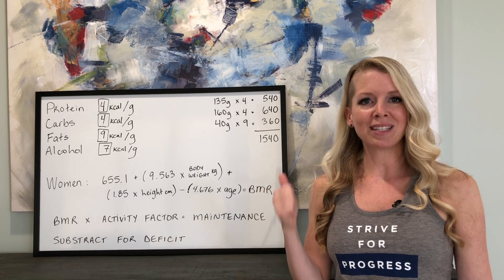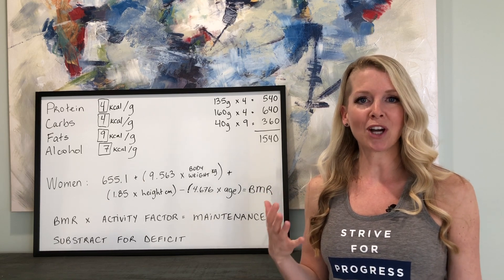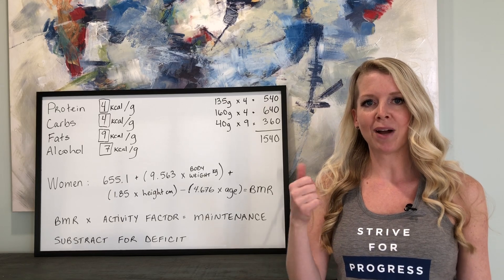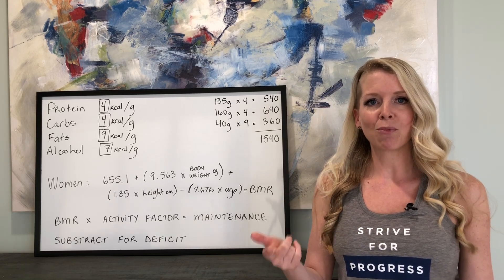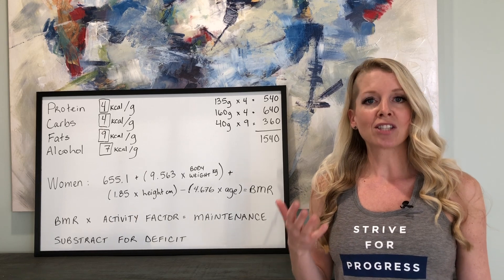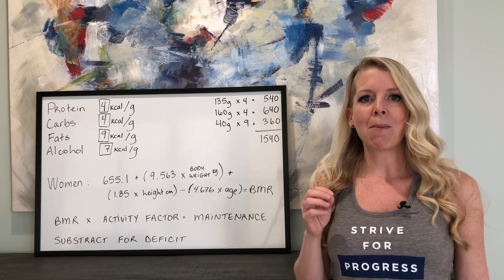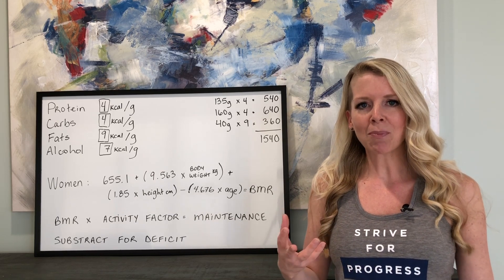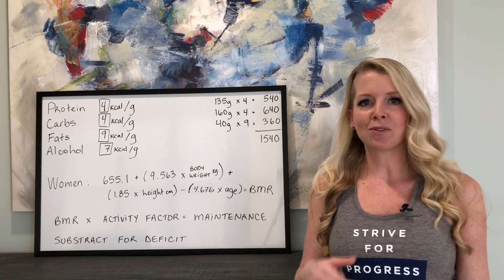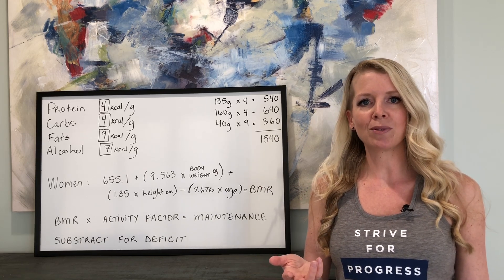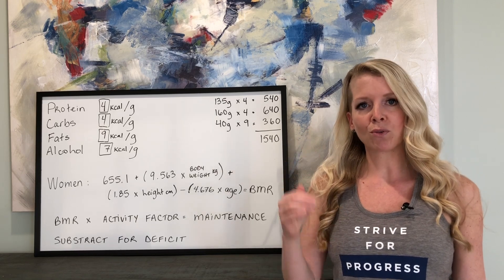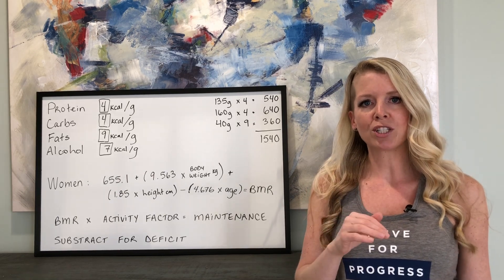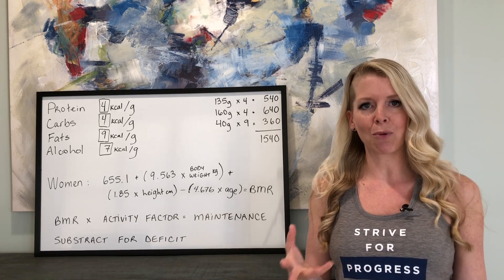Please give it a thumbs up and subscribe because there's so much more coming to help you achieve your goals. This equation requires your height in centimeters, your weight in kilograms, and your age. Some equations include body fat level, but not everyone has calipers or knows how to use them properly. So to keep it simple, we're using one with height, weight, and age — plus your activity factor, which is listed in the description below.